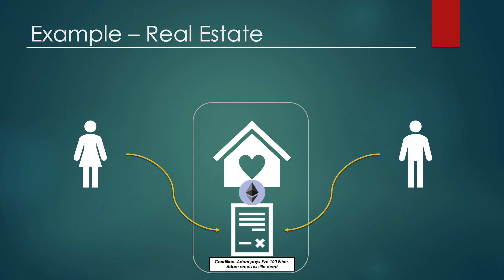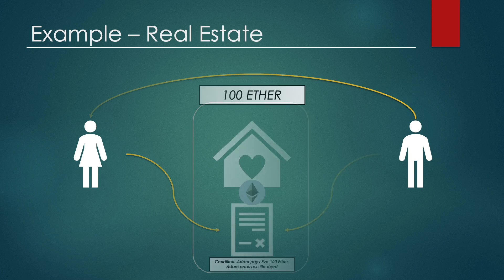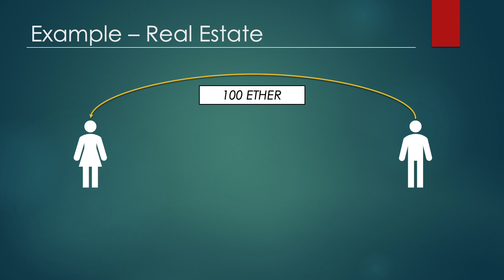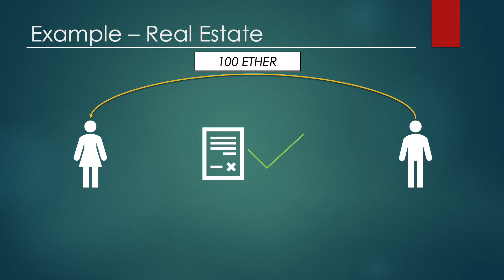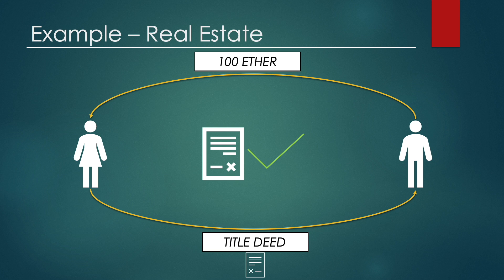Once the smart contract agreement has been issued on the blockchain, it cannot be changed — it's immutable. Once Adam transfers a hundred Ether to Eve's wallet, the smart contract will execute and the title deed will be transferred from Eve to Adam. At this point, Adam becomes the owner of the house almost instantly after payment.